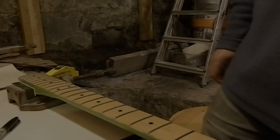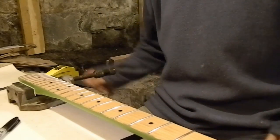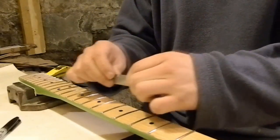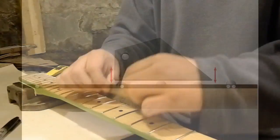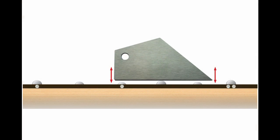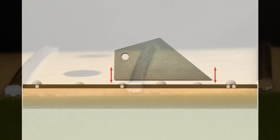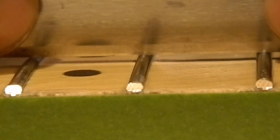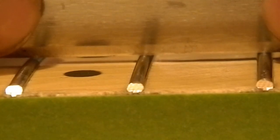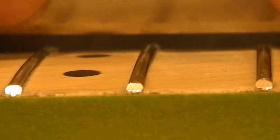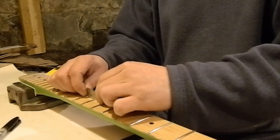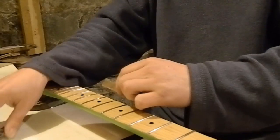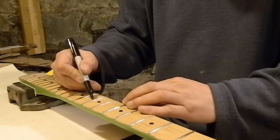We can have a better look at how level the frets are using a fret rocker. Basically, it's a flat edge that spans over three frets, and if it rocks, it means that the fret in the middle is higher than the two at either side. You just work your way up the fingerboard checking each fret. As I go, I just mark on the frets that are really high to give me an idea of what's going on.